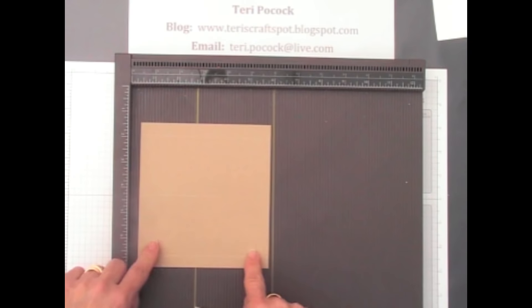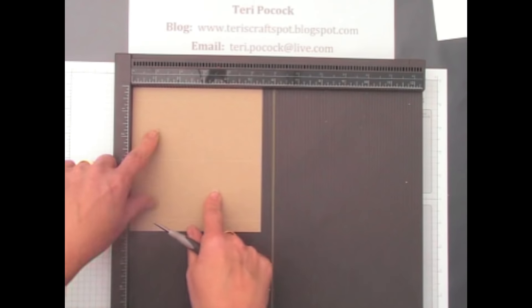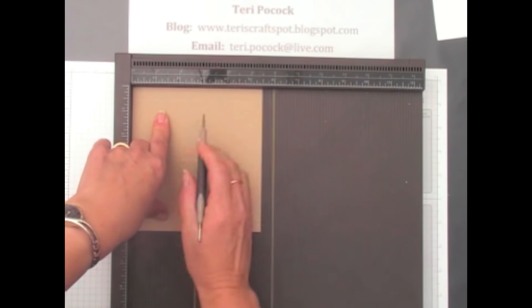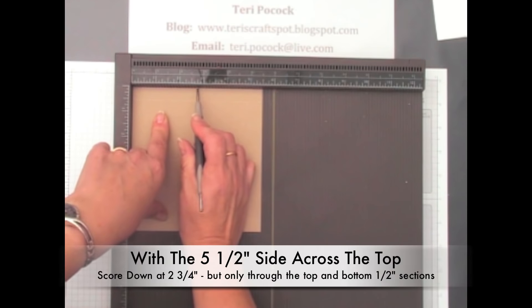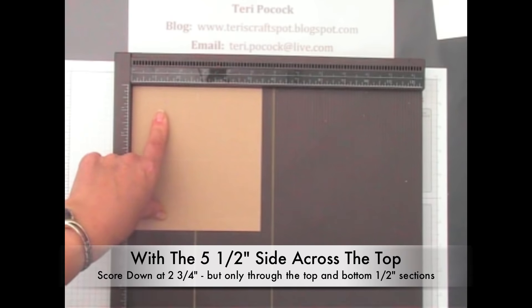If you rotate your cardstock, so your 5 1/2 inch side is now running across the top, this time we also want to score at the midpoint which is now 2 3/4 inches, but we only want to score through that top and bottom half inch section.